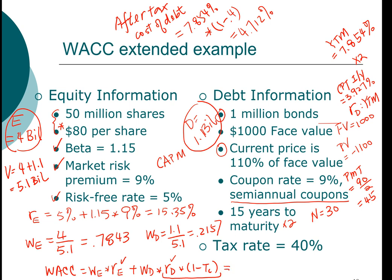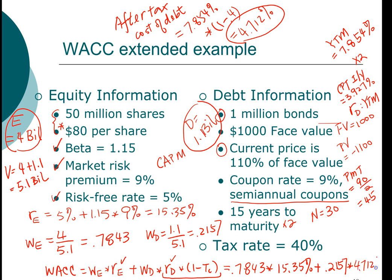Now that we have all the components, we can compute the weighted average cost of capital. We have the weight of equity — 0.7843 — times the cost of equity of 15.35 percent, plus the weight of debt — 0.2157 — times the after-tax cost of debt of 4.712 percent. That gives us a final weighted average cost of capital of 13.06 percent.